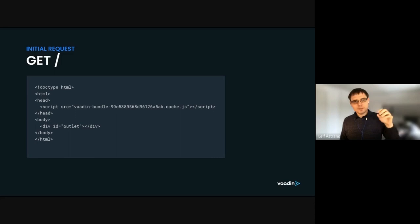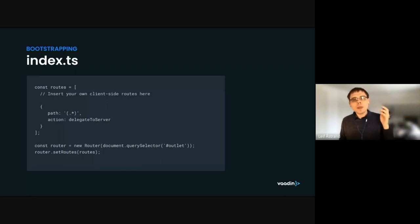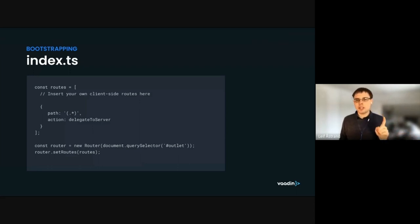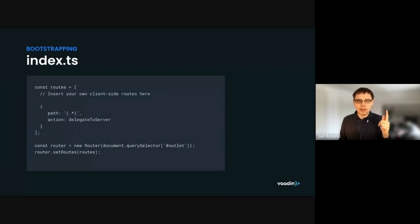It all starts with something in an index.ts file — you'd have this as an explicit file with Hilla, but with Flow it's hidden away. The core of it is configuring the Vaadin router: creating a definition of what routes exist in this application. From the Vaadin router's point of view there's just a single dot-star route that captures anything not captured by higher-priority routes, and it simply delegates navigation asynchronously to Flow on the server. The rest of index.ts configures the single div from the page and makes it use this route definition.